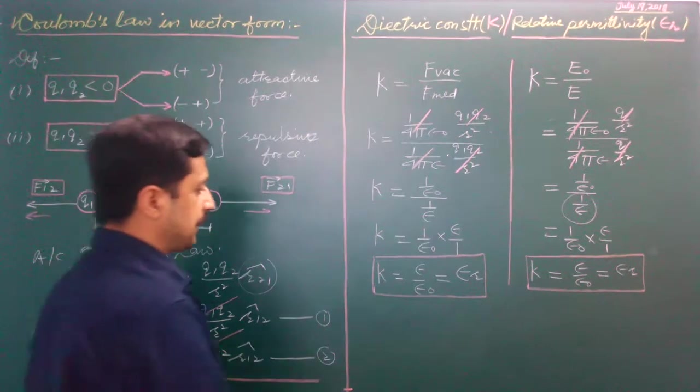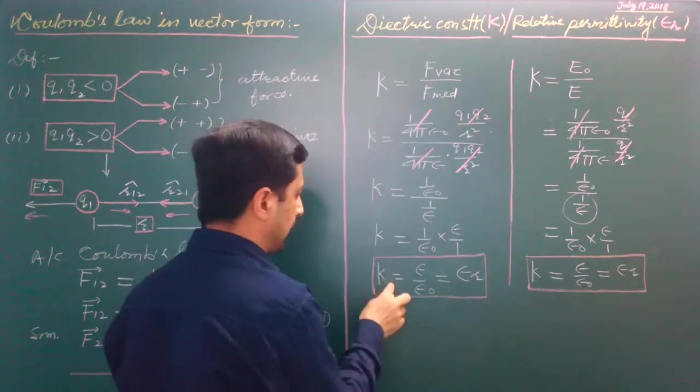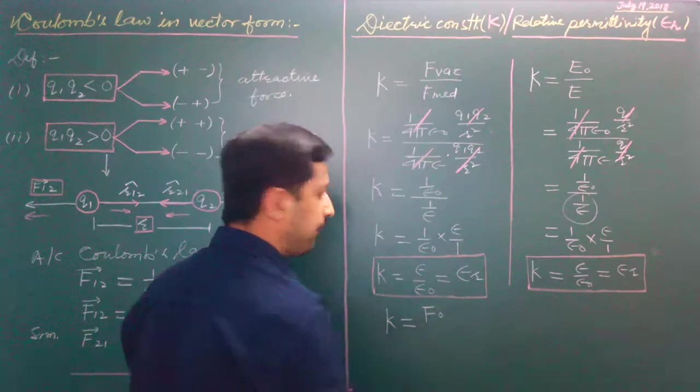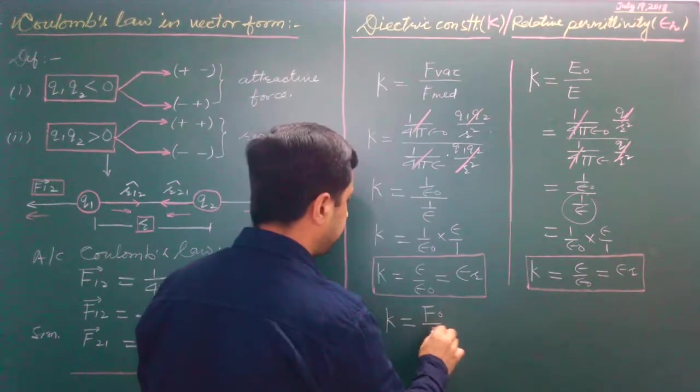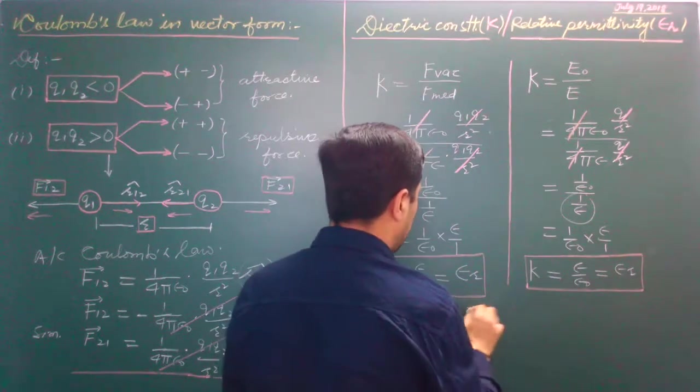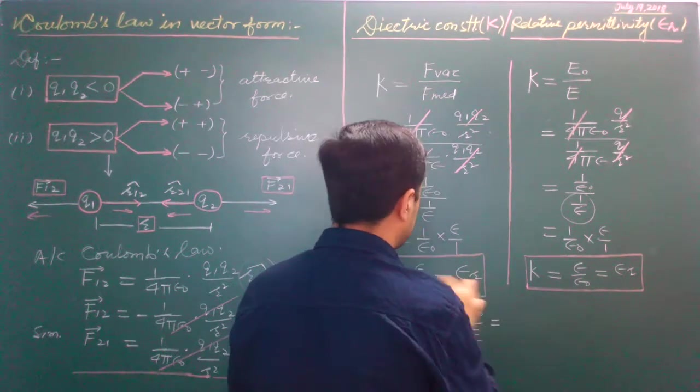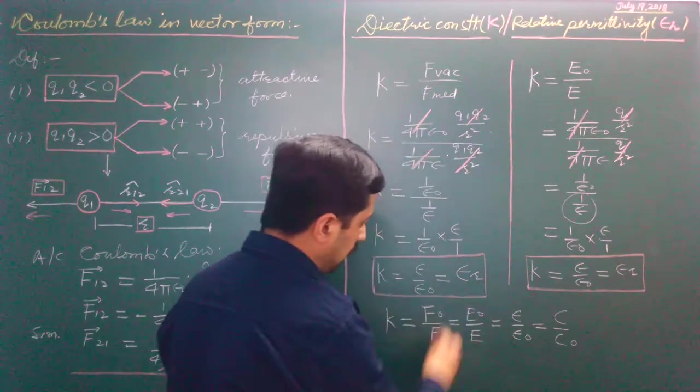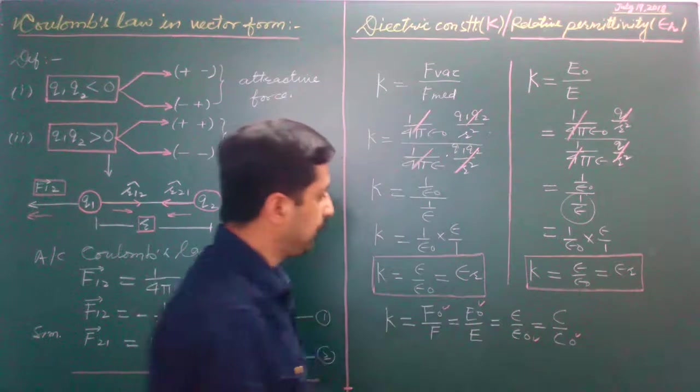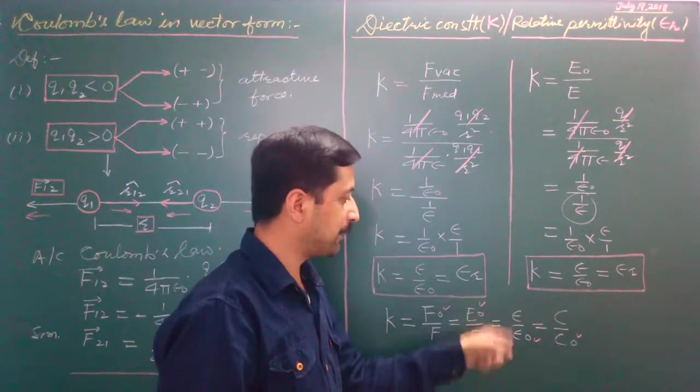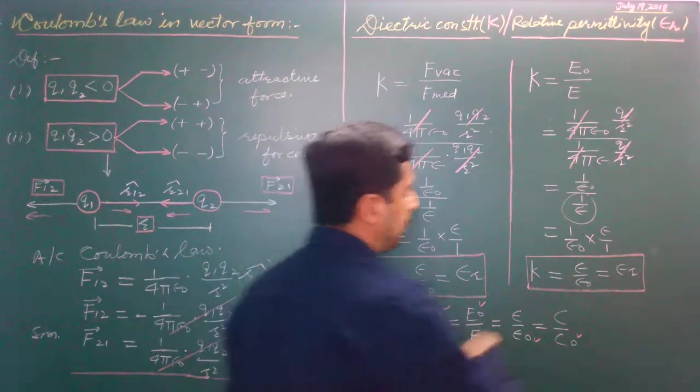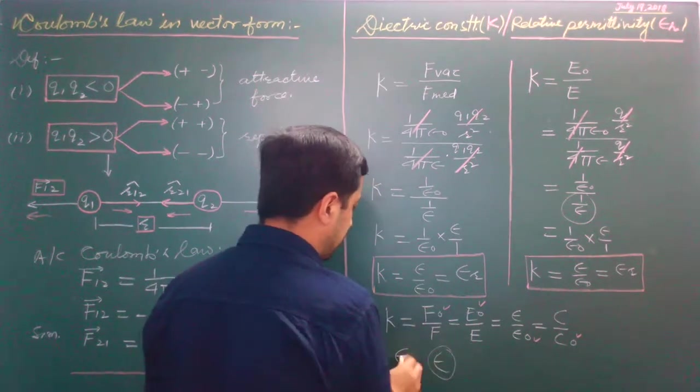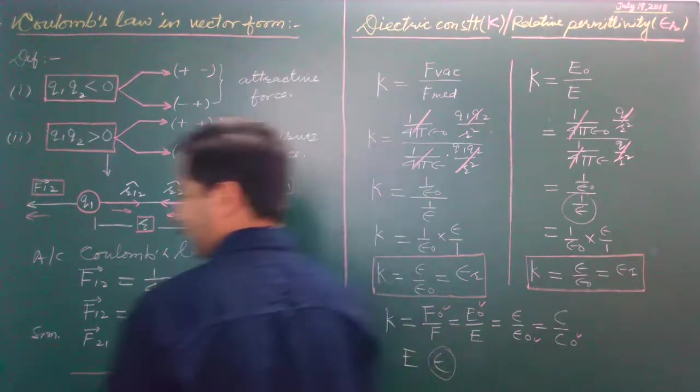In summarize way, we can use this in capacitance: k equals F₀/F equals E₀/E equals ε/ε₀ equals C/C₀. Capacitance in medium divided by capacitance in vacuum. That's all.